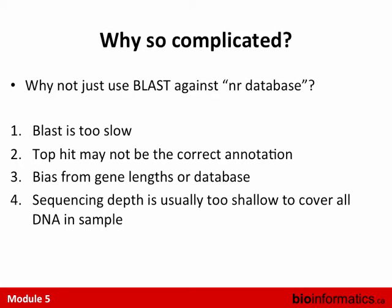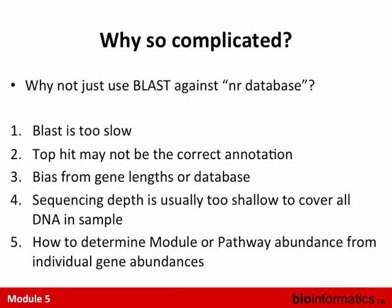Sequencing depth is usually too shallow to cover all the DNA in a sample — unlike genomics where you sequence a genome to 30x coverage, in metagenomics with thousands of different OTUs the chance of getting a read from every gene is unlikely. And when collapsing genes into KEGG modules or pathways, how do you count: if you have one gene from a whole pathway, do you count that pathway as one? Do you divide by the number of genes in the pathway? Or do you wait until you have most of the pathway?